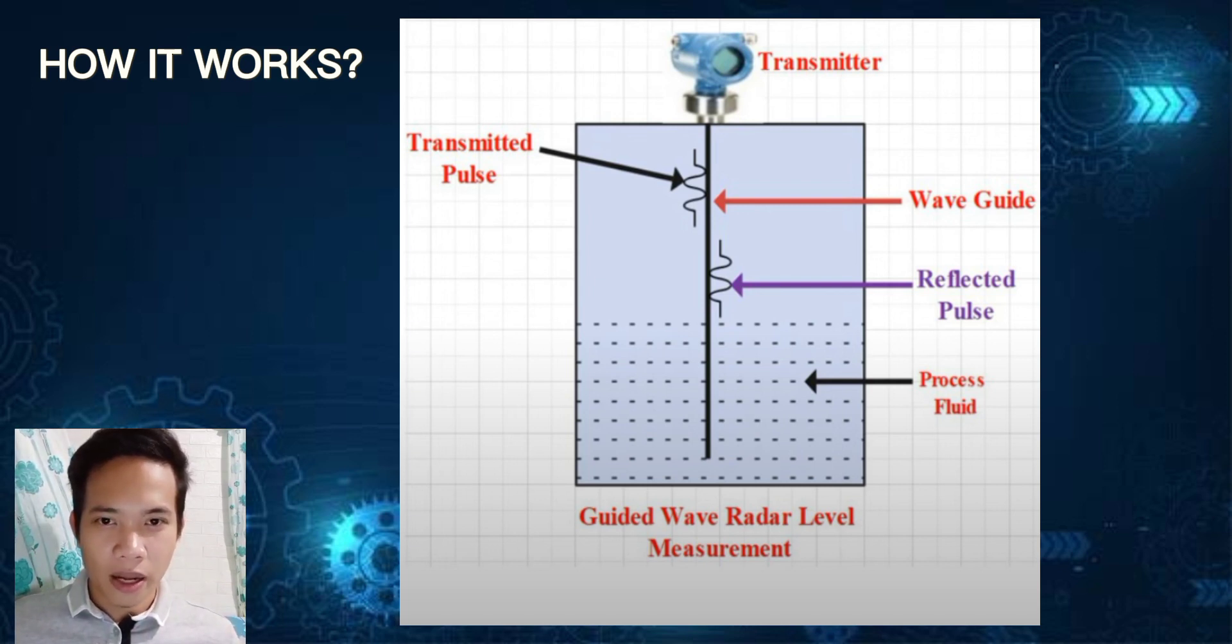This distance corresponds to the level of the material in the tank. This time delay is directly proportional to the distance from the sensor to the material surface. The level measurement is typically displayed on the sensor interface or transmitted to a control system for monitoring and control purposes.